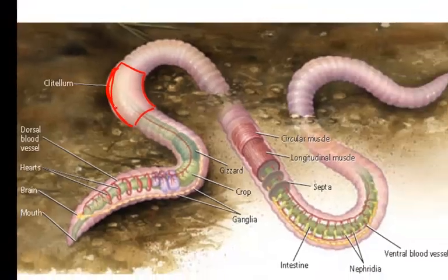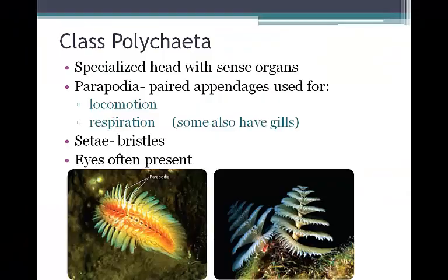There are three major classes. The first class is Polychaeta. These are often marine species with specialized heads and sense organs. They possess parapodia, which are paired appendages used for locomotion or respiration. Some of these worms also have gills, setae, and often have eyes.